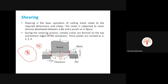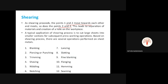We are separating the sheets from the initial workpiece. The typical application of the shearing process is to cut large sheets into small sections for subsequent press working operations. Based on the shearing process, there are several operations performed on sheet metal: blanking, piercing or punching, centring, shaving, nibbling, notching, lancing, slotting, fine blanking, flanging, hemming, and seaming. The important ones described in the syllabus will be examined one by one.